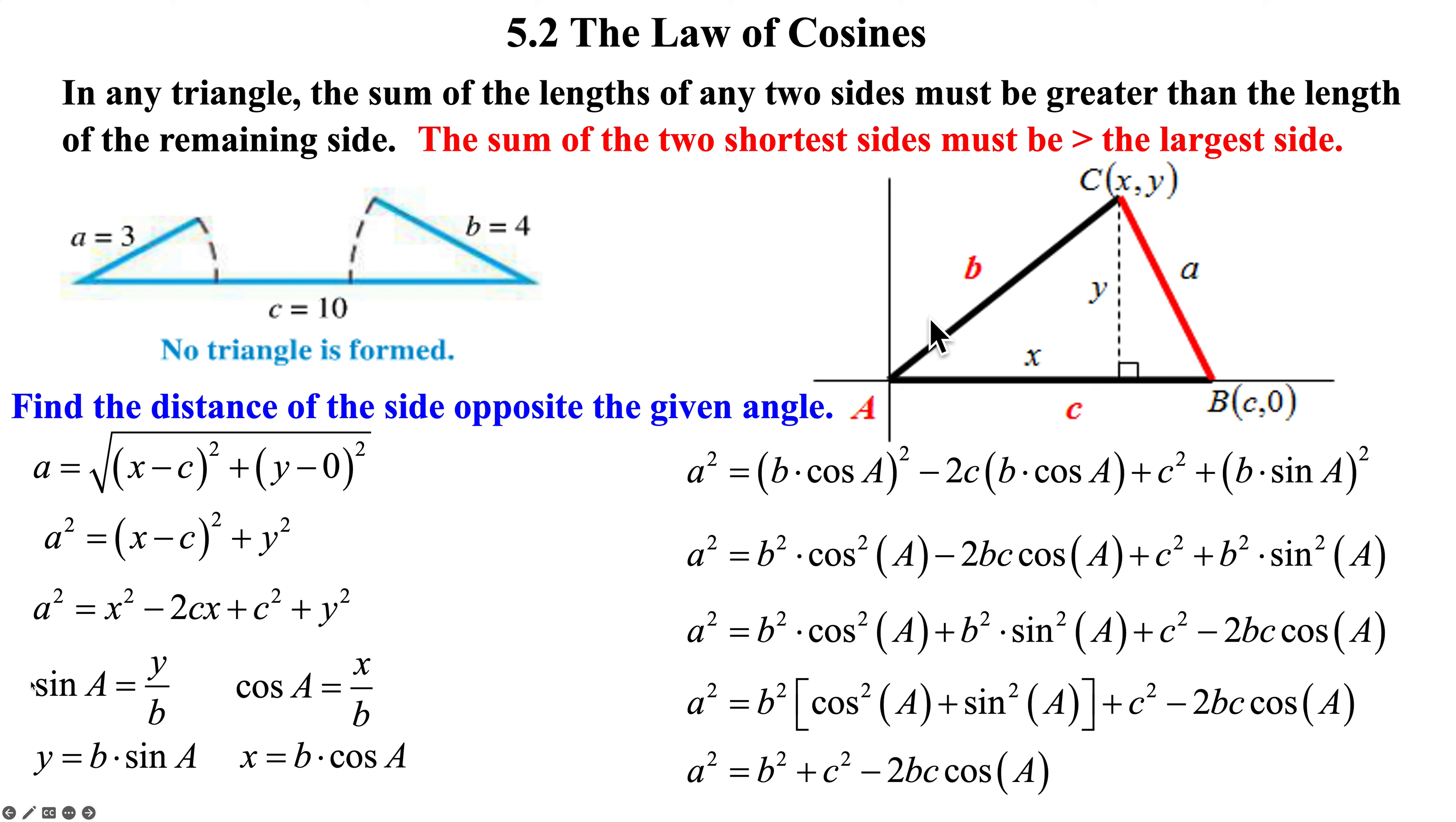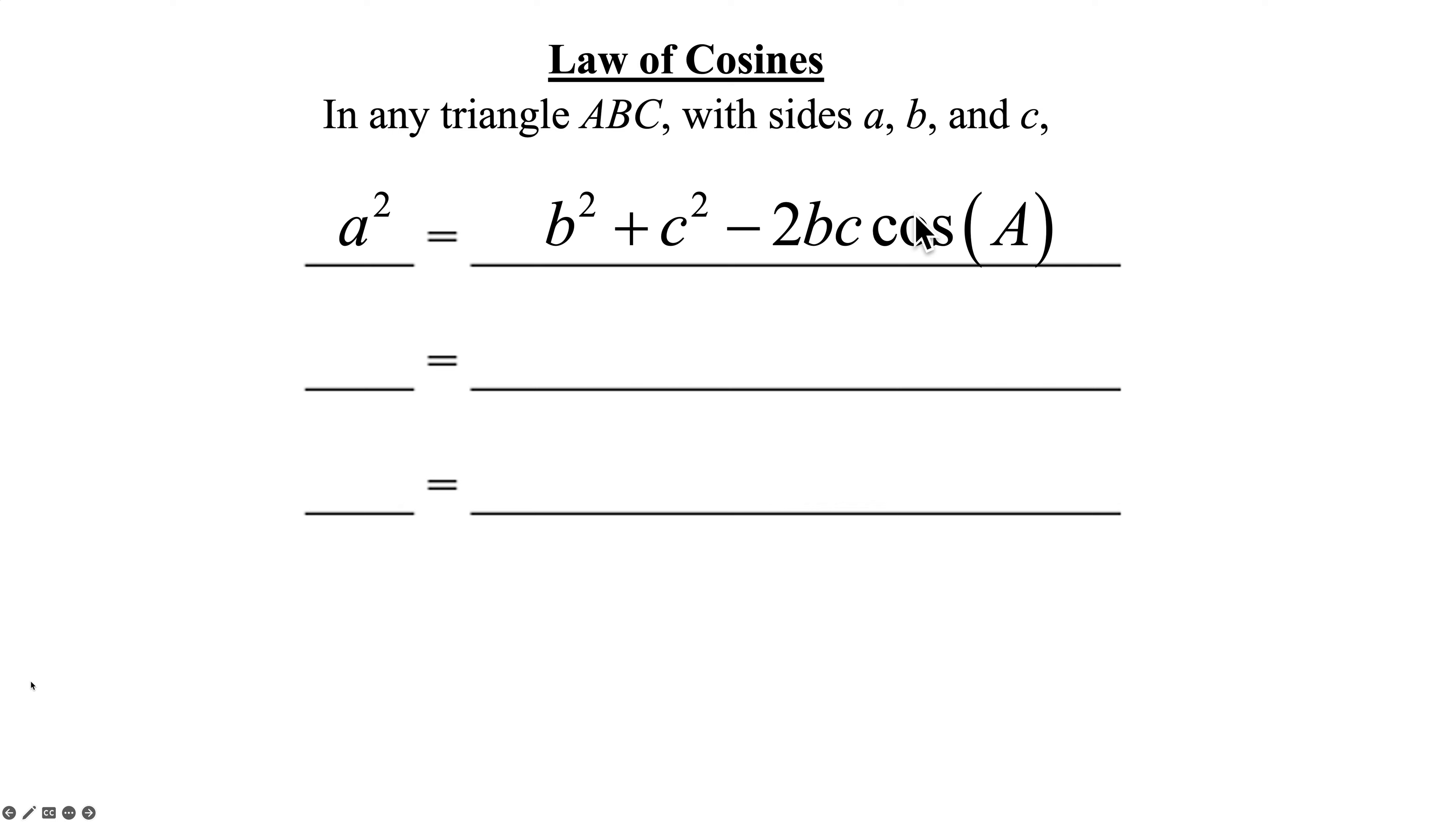So anytime you have a side-angle-side relationship, the angle is included. It's between the two sides that are given. You have the law of cosines. And because there's three angles, you're going to have three forms of this formula. So we had angle A, side B, side C. We'll have angle B with side A, side C. We'll have angle C with side A, side B. So there's our first one. That's the one we created.